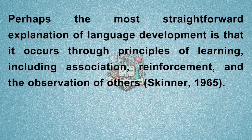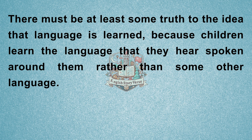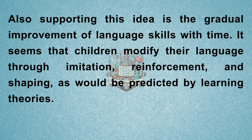Perhaps the most straightforward explanation of language development is that it occurs through principles of learning, including association, reinforcement, and the observation of others (Skinner, 1965). There must be at least some truth to the idea that language is learned, because children learn the language that they hear spoken around them rather than some other language. Also supporting this idea is the gradual improvement of language skills with time. It seems that children modify their language through imitation, reinforcement, and shaping, as would be predicted by learning theories.